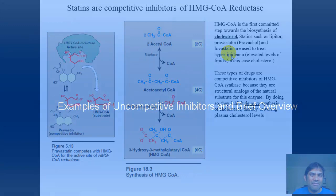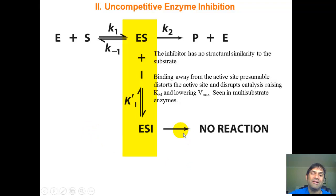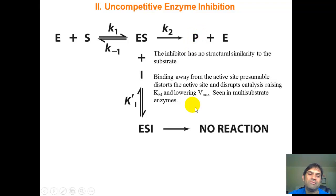Uncompetitive inhibition is different: the inhibitor binds to the enzyme-substrate complex (ES), forming the ternary ESI complex, which produces no reaction. The dissociation constant here is KI prime. A high dissociation constant means ESI will dissociate and the steady-state reaction resumes; a low dissociation constant means ES plus I stays locked as ESI, leading to inhibition.